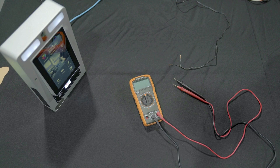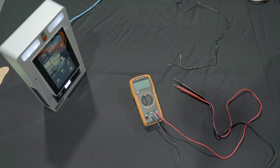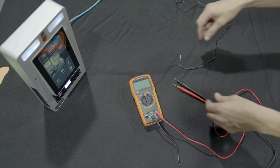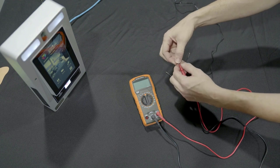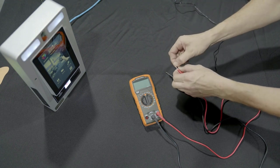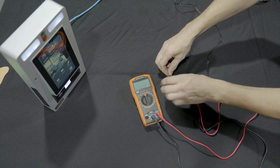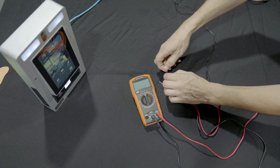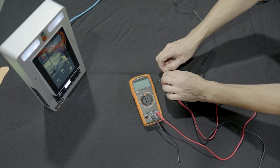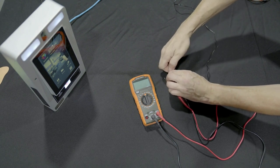Strip enough of each conductor's insulation to have enough wire for a firm and stable connection to the multimeter. Wrap each wire into the multimeter probes, the suspected positive to red, the suspected negative to black. Test the multimeter function by setting it to the correct DC voltage setting. It should read 0 volts.